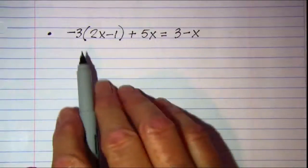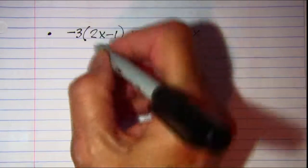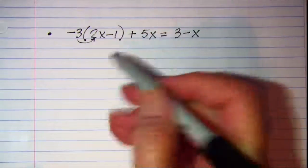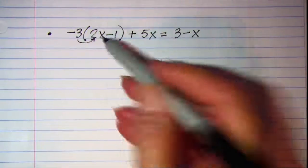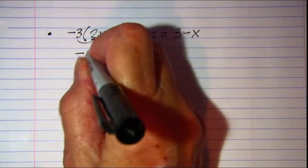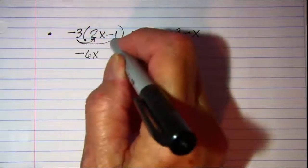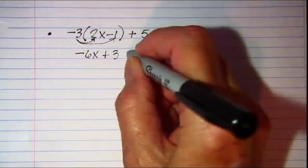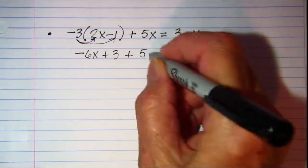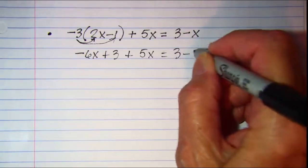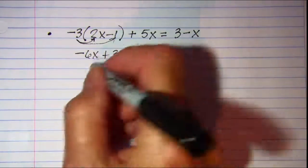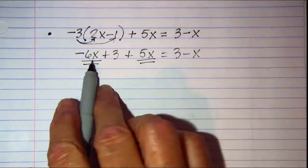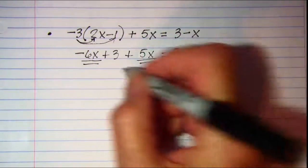Our next problem, again we have parentheses, so let's use the distributive property to distribute this negative 3. Negative 3 times 2x is negative 6x. Negative 3 times negative 1 is positive 3. And then just copy the rest of the equation. Now we can combine my terms. Negative 6x and positive 5x is negative x.